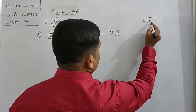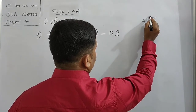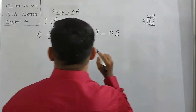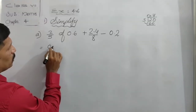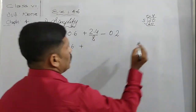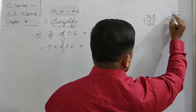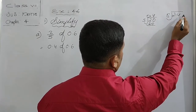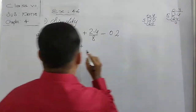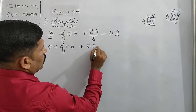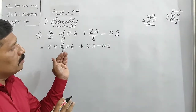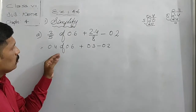2 divided by 5: 5 is bigger than 2, so we put 0. Then 5 fives are 20, so we get 0.4. In place of 2/5 we write 0.4 of 0.6. And for 2.4 divided by 8: here 2 is smaller, so we take 24 with decimal placed. 8 threes are 24, so we get 0.3. This answer is 0.3 and minus 0.2. Now every number is changed to decimal and we can start the solution.